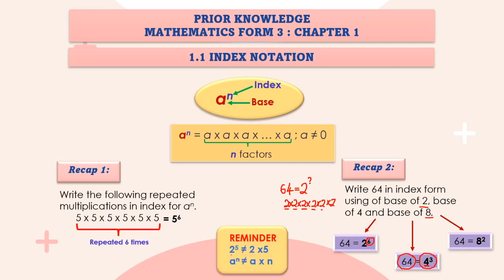Important reminder: 2 to the power of 5 is NOT equal to 2 times 5. Students must be careful. Two to the power of 5 means 2 times 2 times 2 times 2 times 2 — repeated multiplication five times — which equals 32. But 2 times 5 is only 10. They are not equal. So remember: a to the power of n is not equal to a times n.